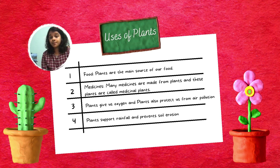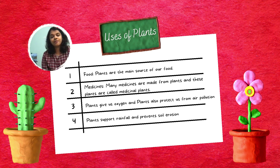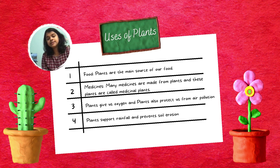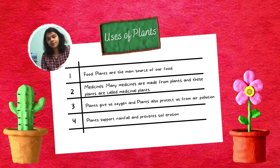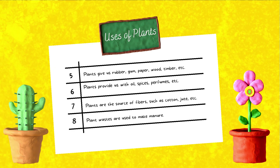Uses of plants. Number one — food: plants are the main source of our food. Number two — medicines: many medicines are made from plants, and these plants are called medicinal plants. Plants also give us oxygen and protect us from air pollution.